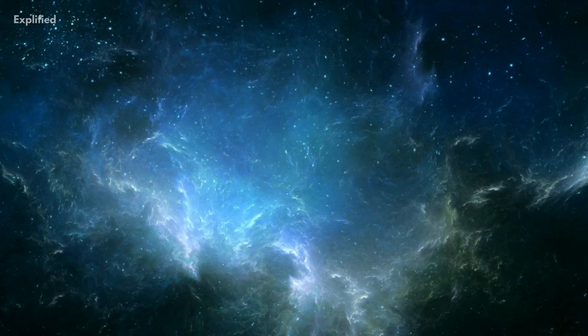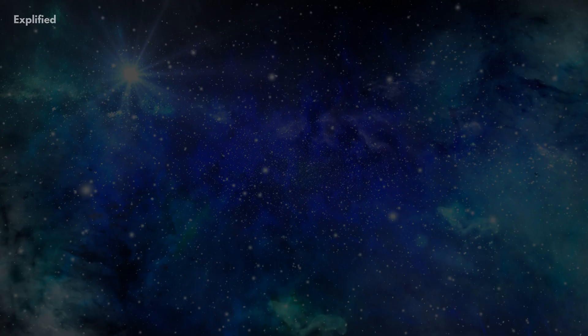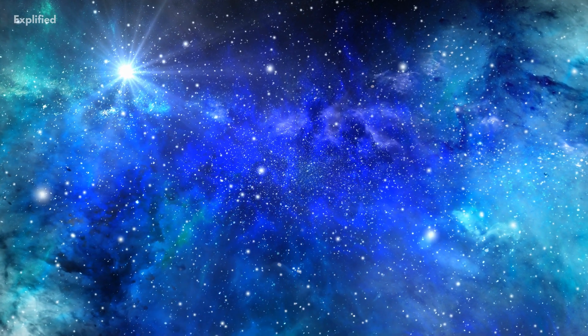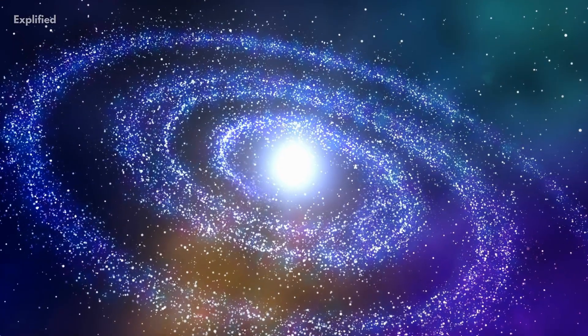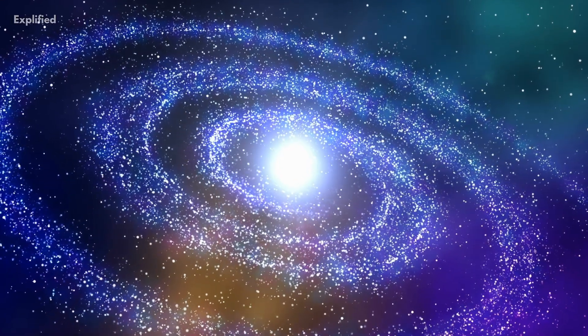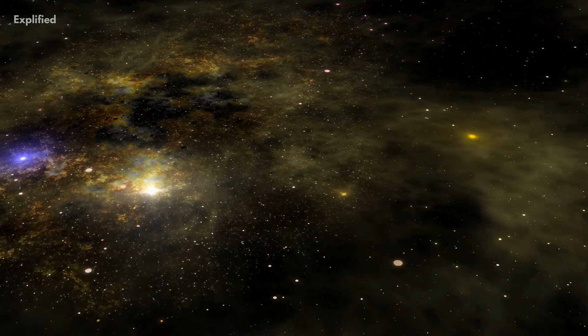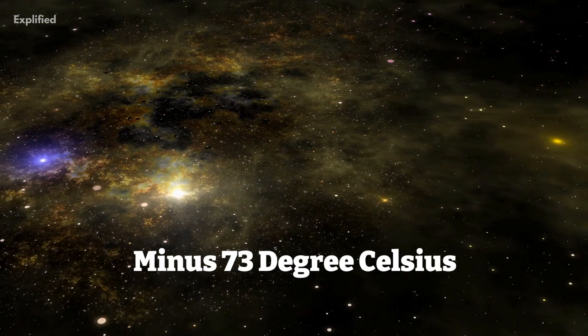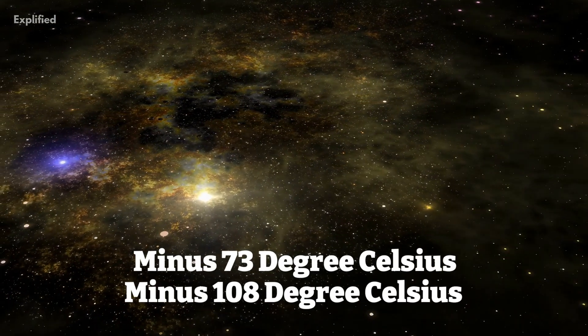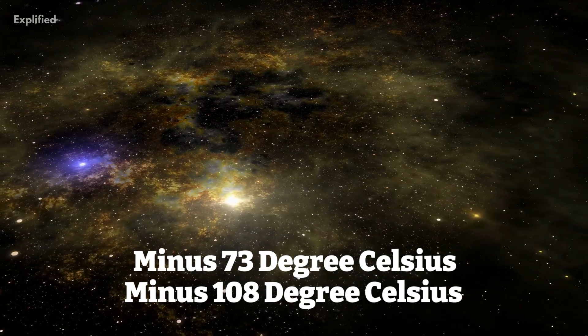Lastly, the Kuiper belt is known to be quite cold. As it is located beyond Neptune, the temperature there is only 50 degrees above absolute zero. The asteroid belt has a temperature of around minus 73 degrees Celsius to minus 108 degrees Celsius.